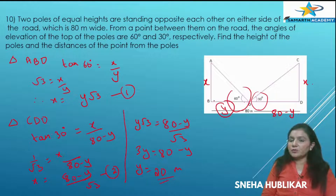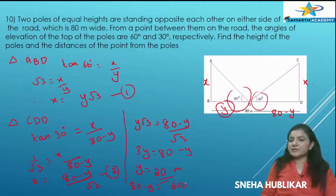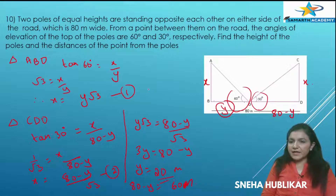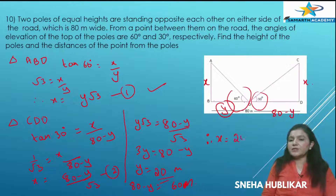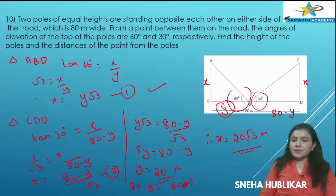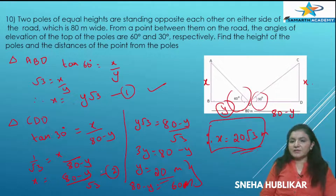The distance of the point from one pole is 20 meters. The other distance is 80 minus 20, which is 60 meters. Now we need to find the height of the pole: X equals Y root 3, therefore X equals 20 root 3 meters. So the answers are distances of 20 and 60 meters, and the height of the pole is 20 root 3 meters.